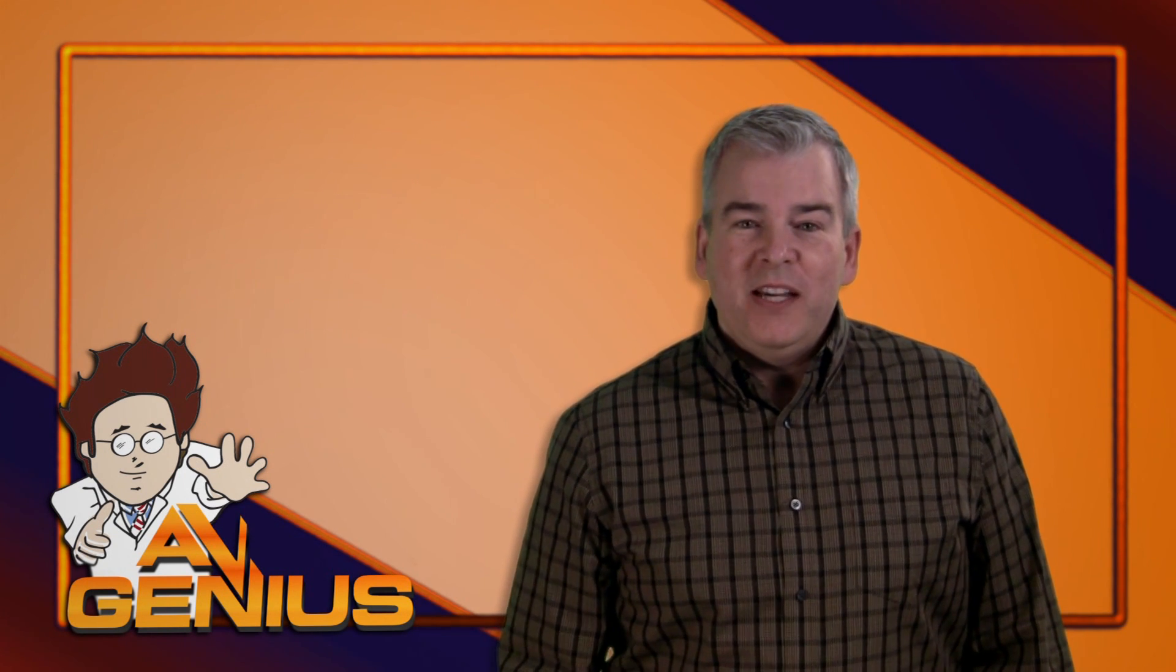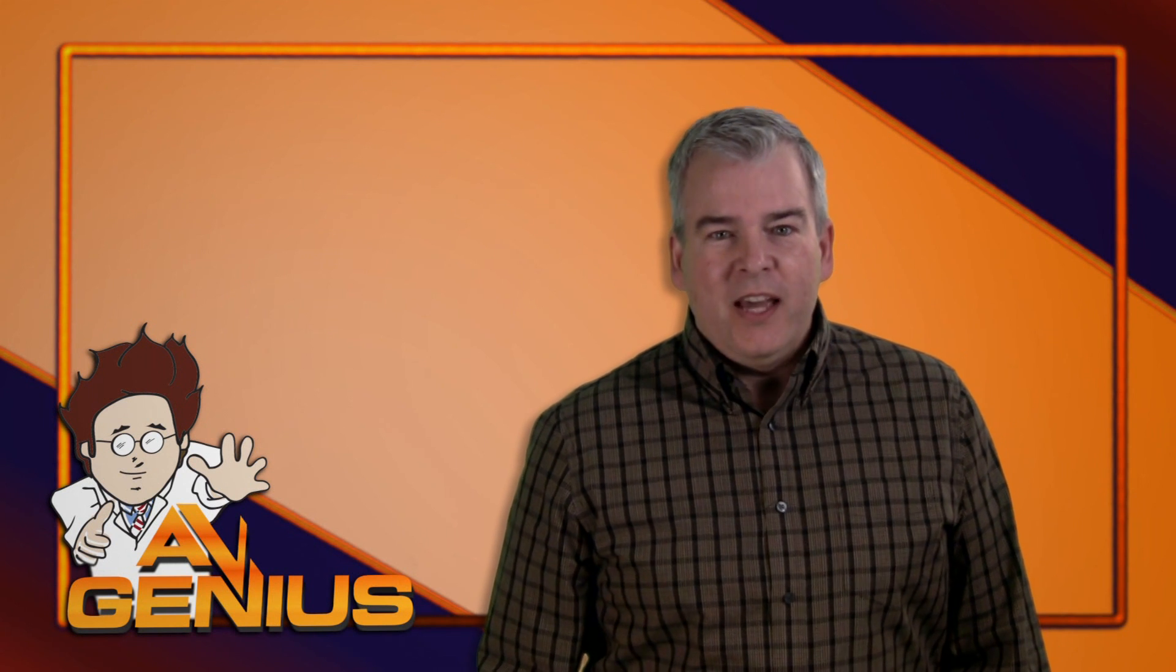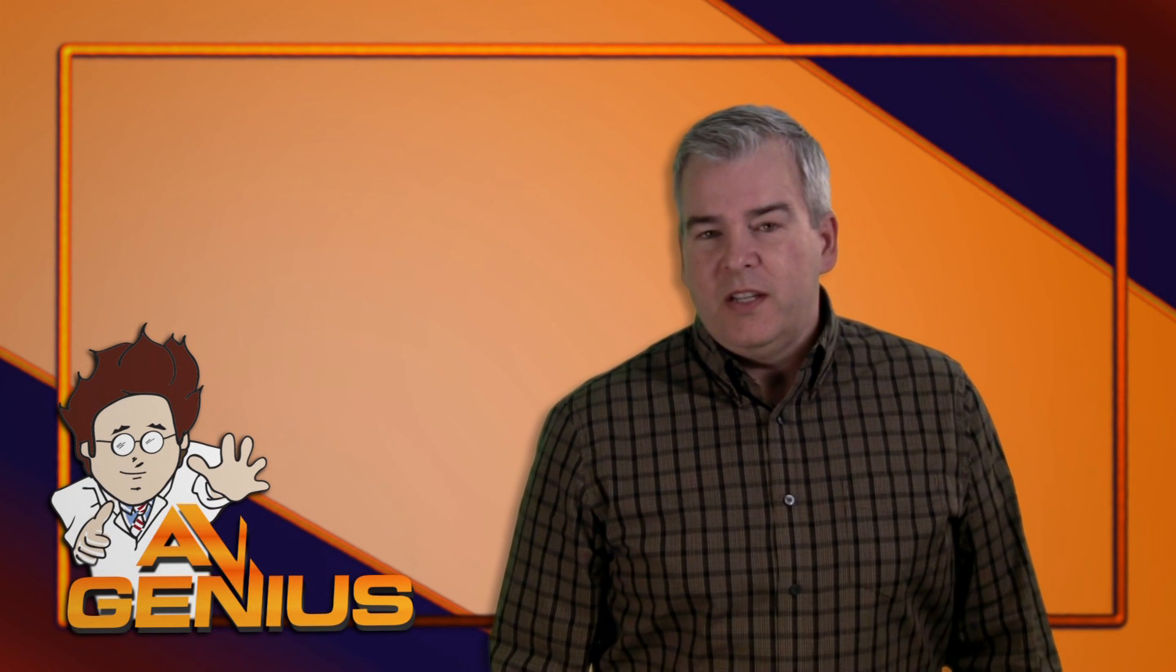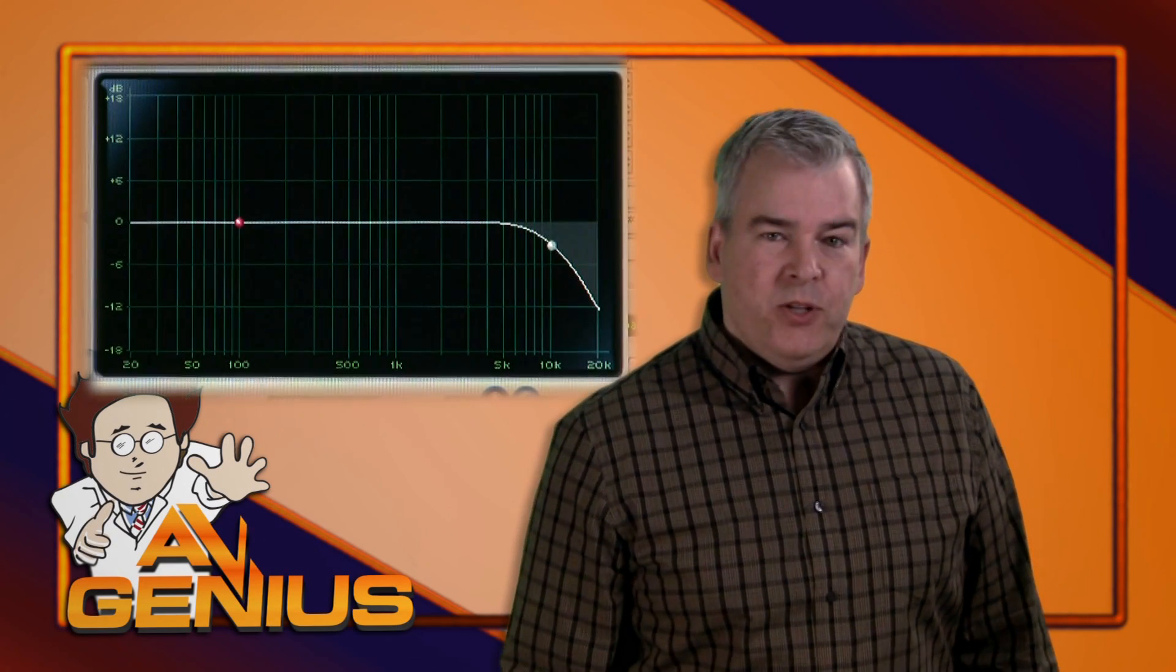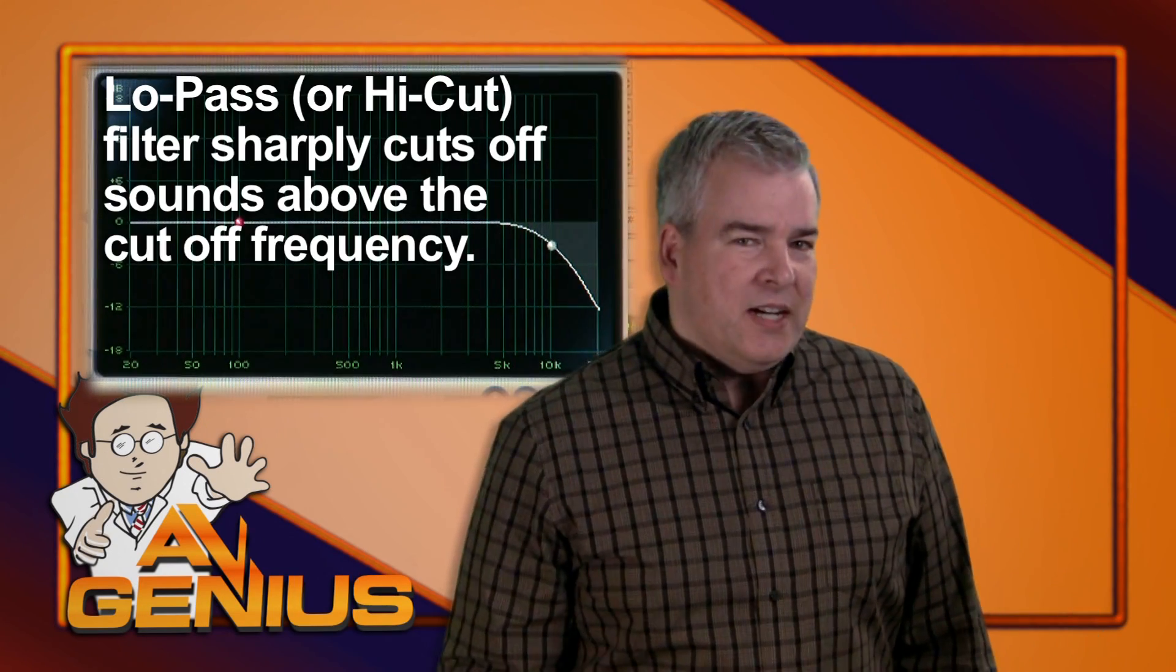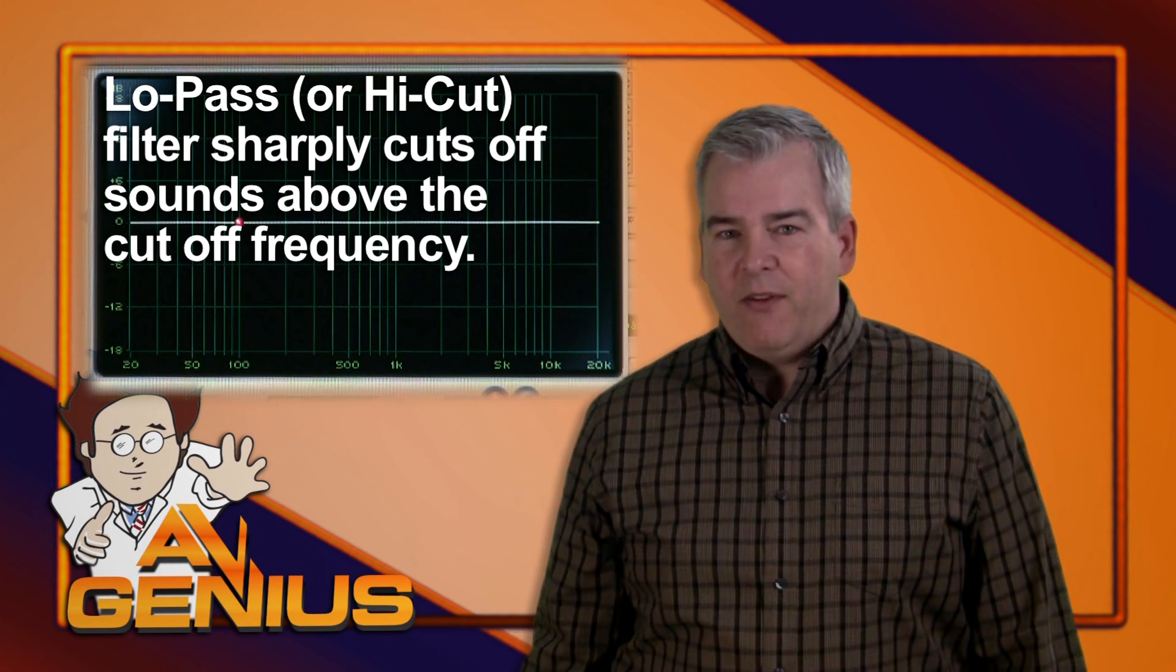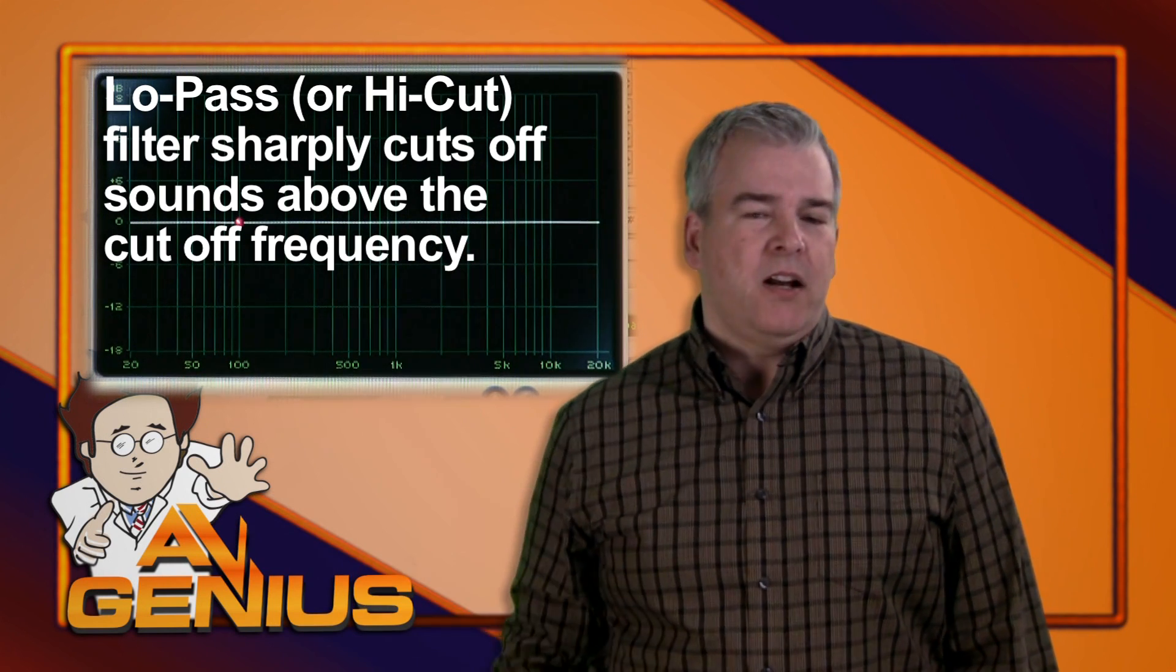The fifth type of EQ is found on digital boards and some better analog boards. It's called the low-pass filter. It's the mirror image of the high-pass filter. What it does is sharply cut off everything above the cutoff frequency.